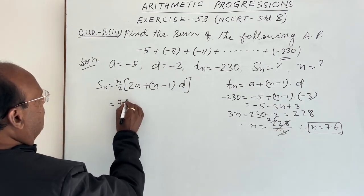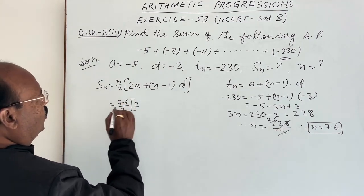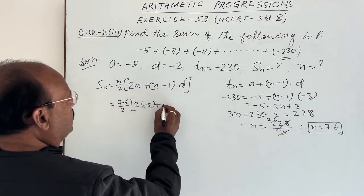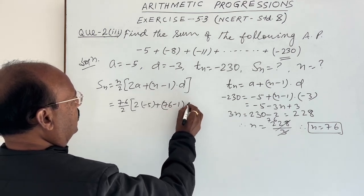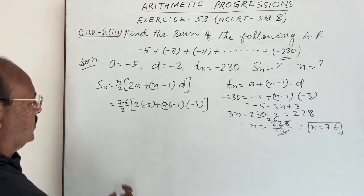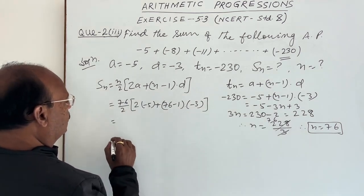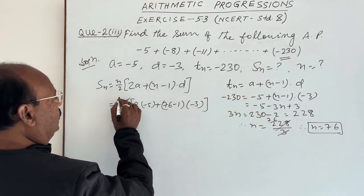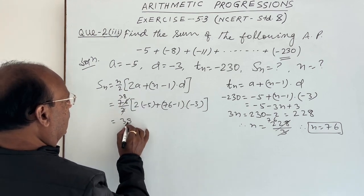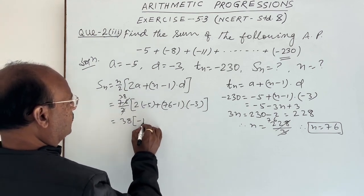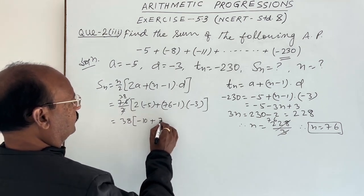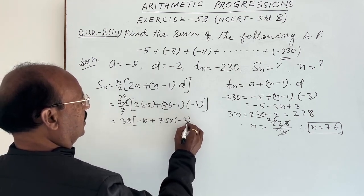So N is 76. This is 76 divided by 2, 2A, A is minus 5, plus N minus 1 means 76 minus 1 into D, D is minus 3. Let us proceed and simplify it. This is equal to, cancel out it, 2 threes are 6, 2 eights are 16, so 38 into, this is 2 into minus 5, minus 10, and this is 75 into minus 3.